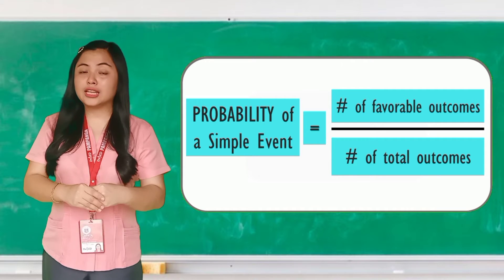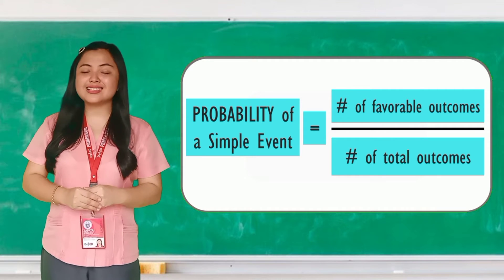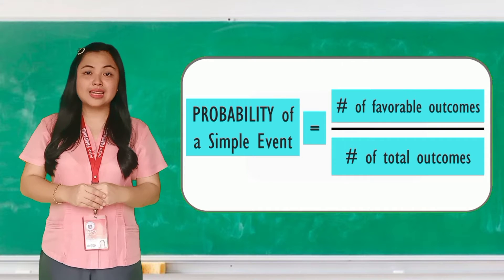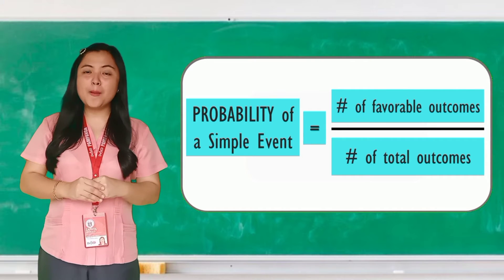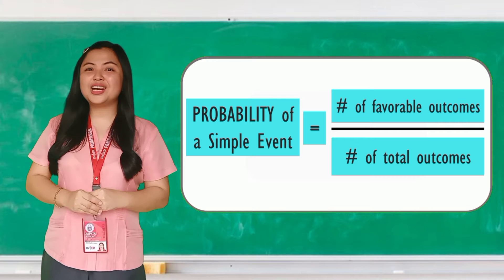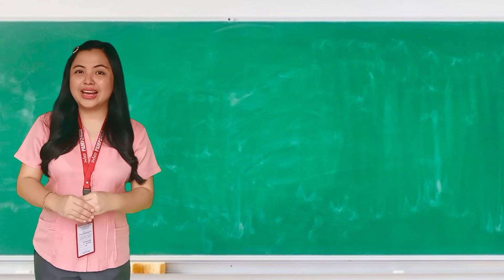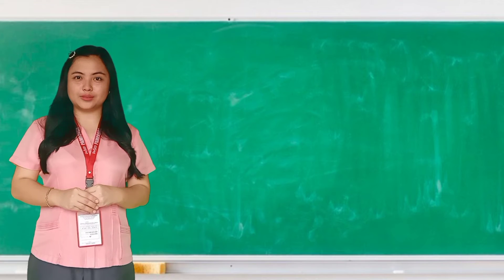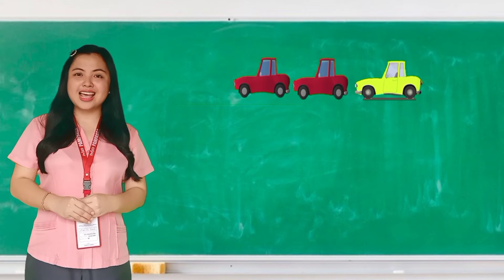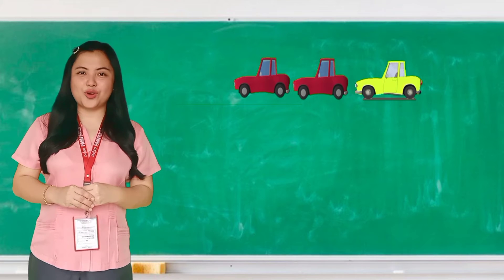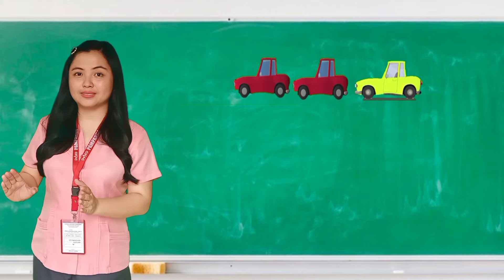Take note that our formula is in fraction form, that's why it is a must to simplify your final answer. Let's have an example. There are two red cars and one yellow car possible to pass by.